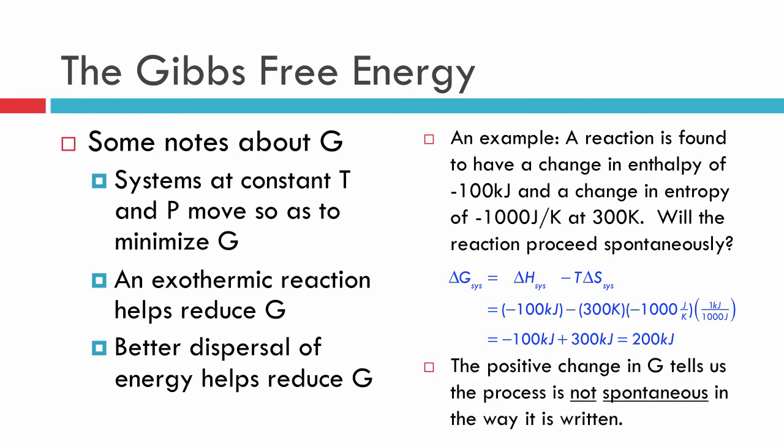What that tells me is, the way that I've written down this process to go from start to end, I get a positive delta G. It's not going to proceed in the direction I've written it because it's not spontaneous in that direction. It's possible that it could proceed in the opposite direction because that process is spontaneous. If we flip or reverse the reaction, all of these numbers will change—we'd have a positive 100, we'd have a positive 1000 if we were to reverse the process.